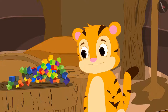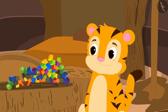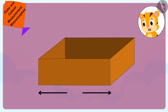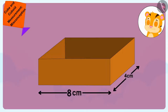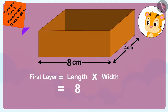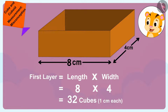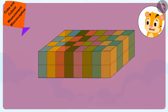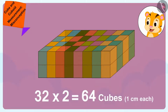It is not necessary that the volume of the cube shape is always less than the volume of the cuboid. See, the length of this cuboid shaped box is 8cm and the width is 4cm. This means that the first layer of this cuboid shaped box will have 8 times 4, 32 cubes of dimension 1cm each. And its height is 2cm, that means there would be 2 such layers. We will be able to place a total of 32 times 2, 64 cubes of dimension 1cm each in the cuboid shaped box.